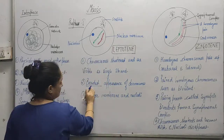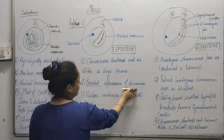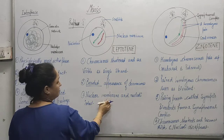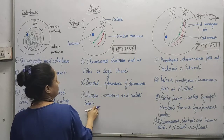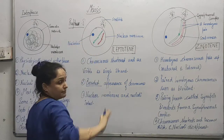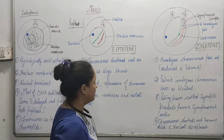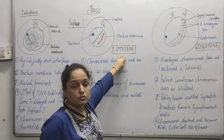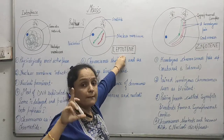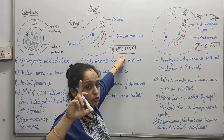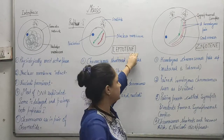The chromosomes show a beaded appearance. The nuclear membrane and nucleoli are still intact. This is the first phase of prophase I, known as Leptotene.